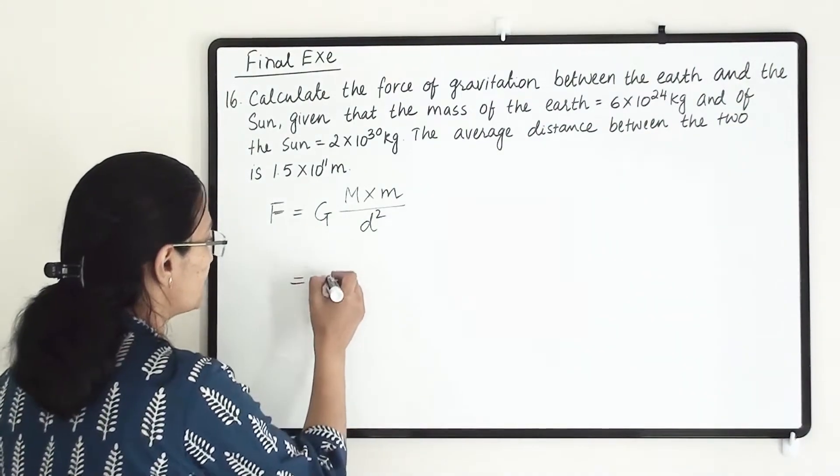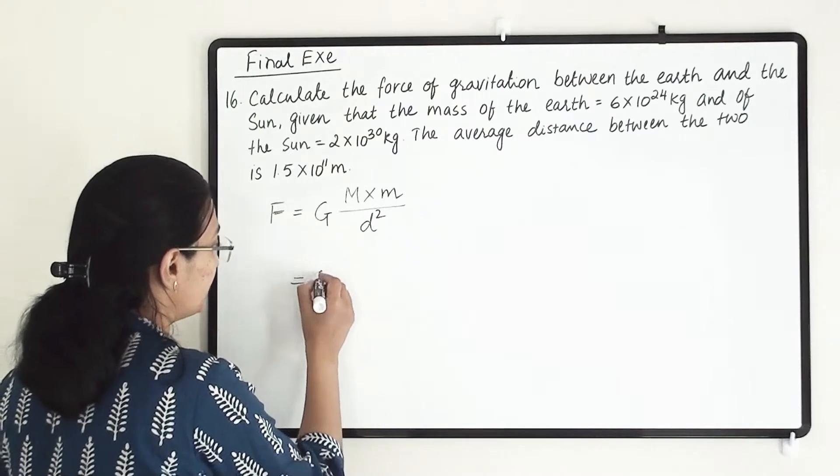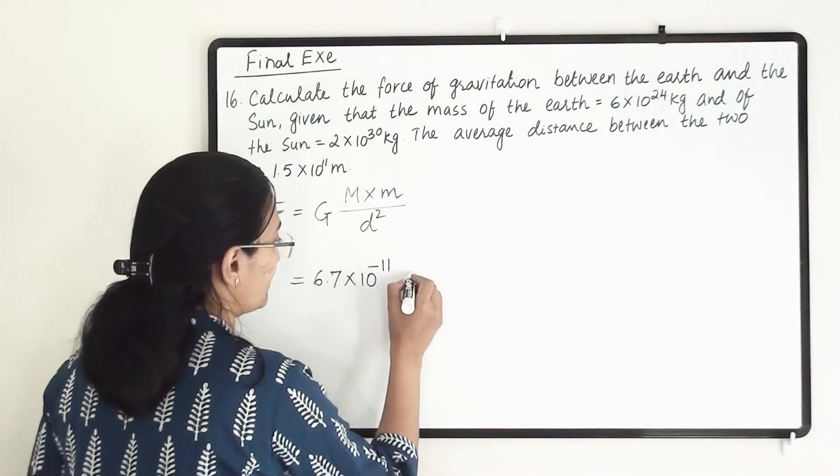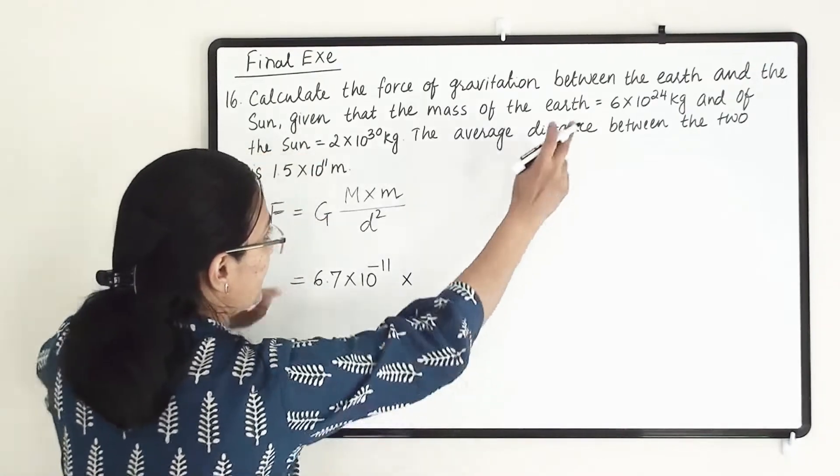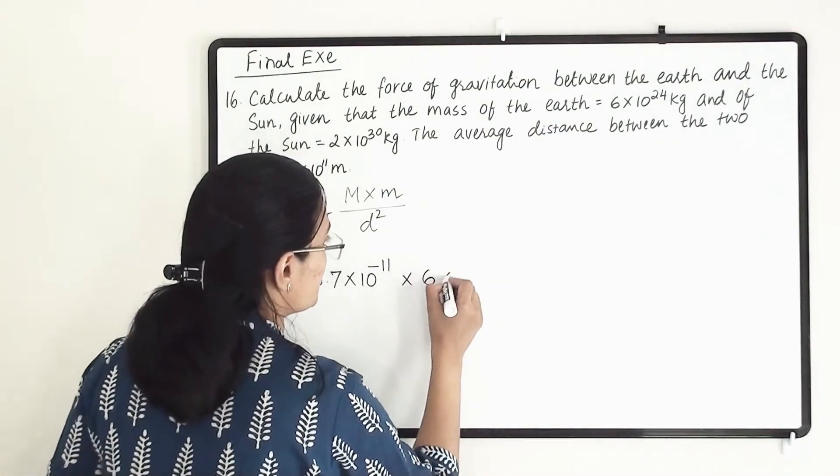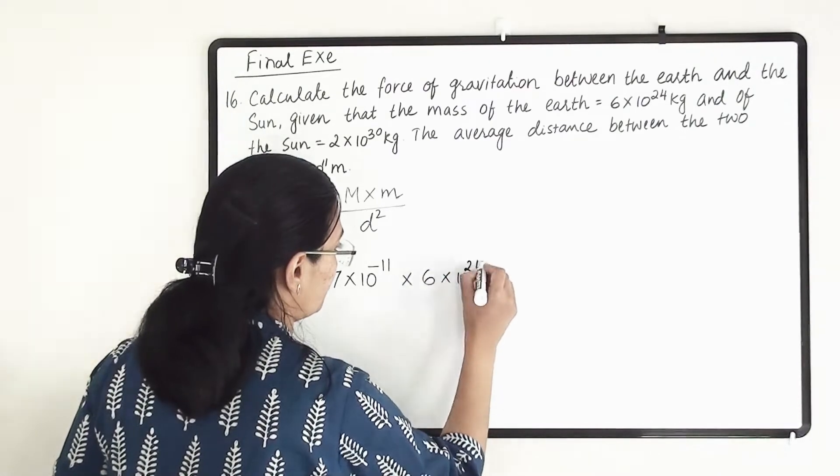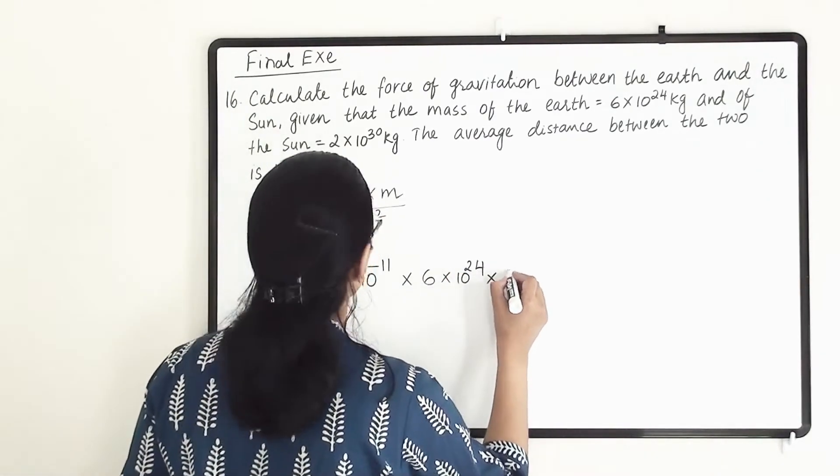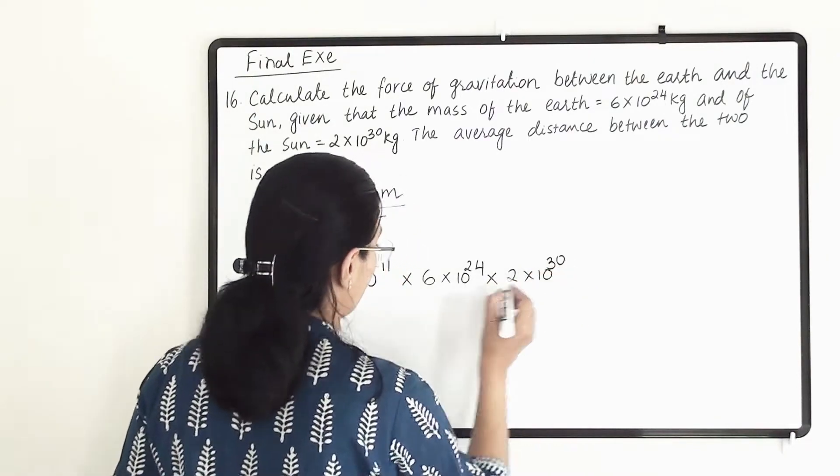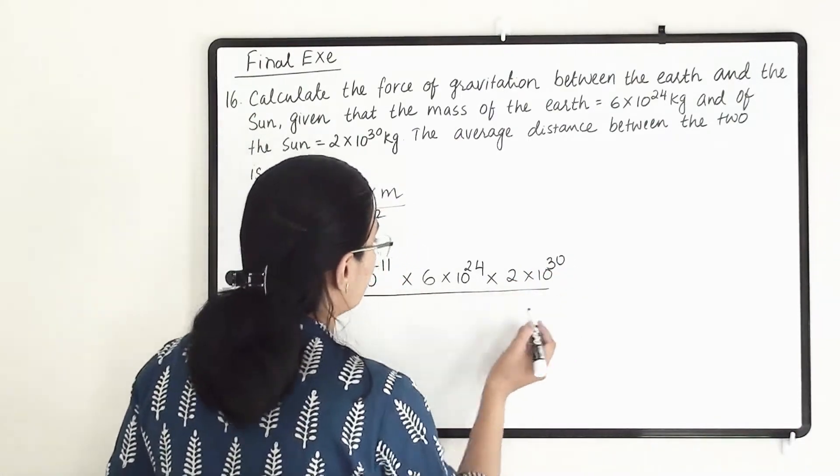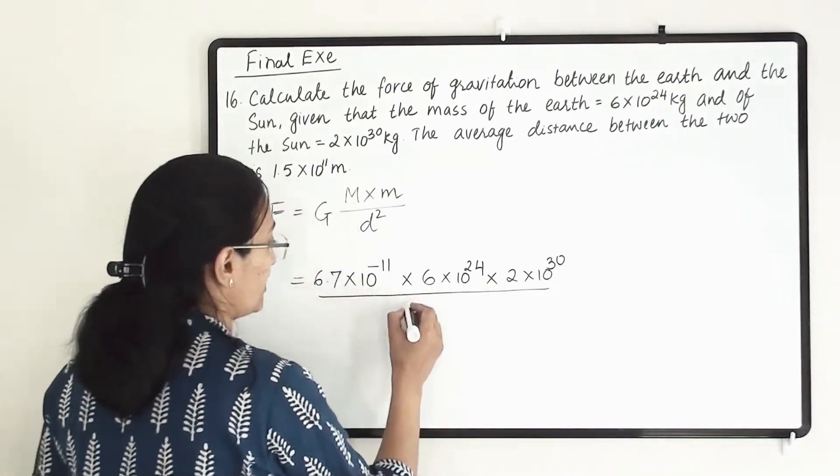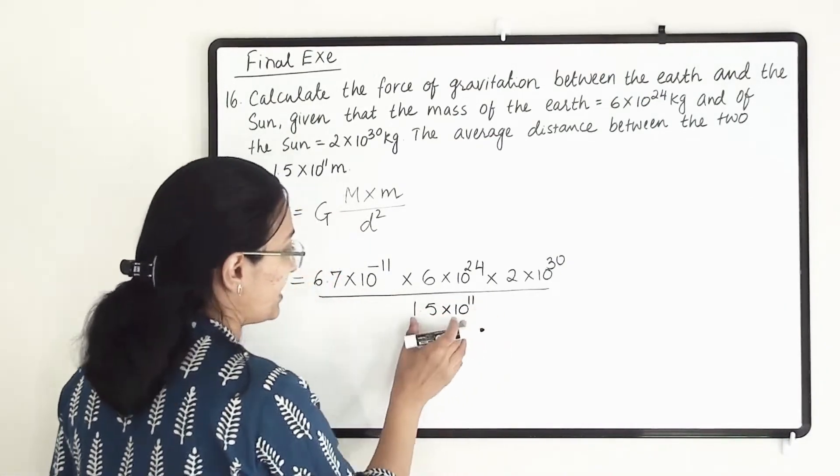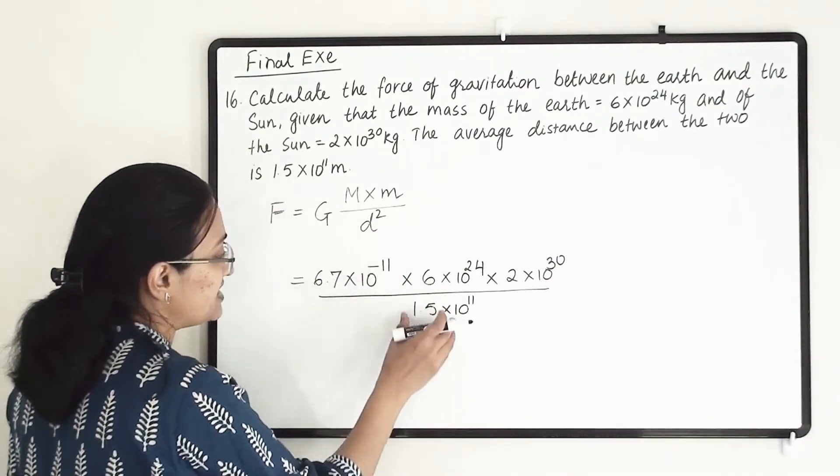Let us put all the values. First is G, that is 6.7×10⁻¹¹, times capital M. Capital M we are taking as Earth, 6×10²⁴. Small m we are taking as the Sun's mass, that is 2×10³⁰, divided by the distance between these two, 1.5×10¹¹, and this is squared, d squared.